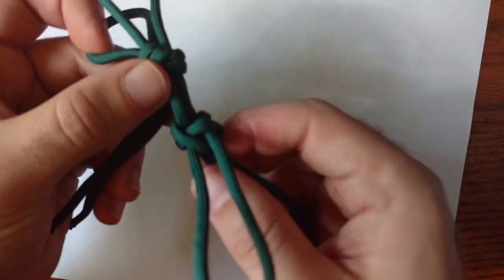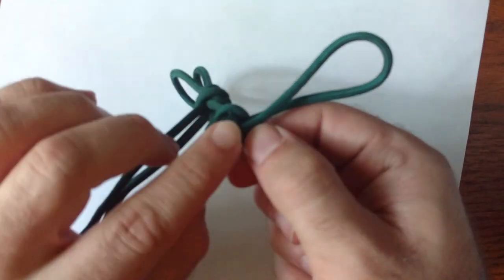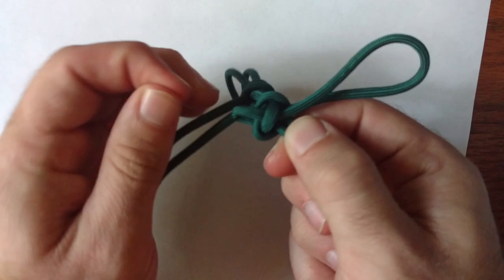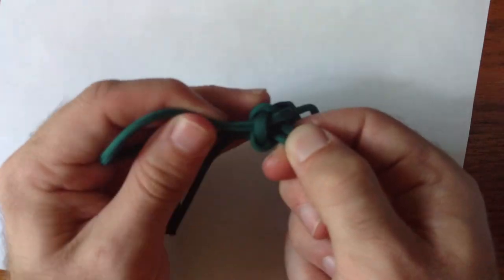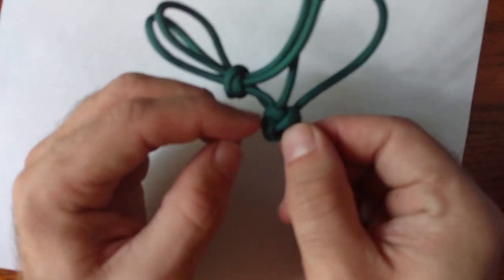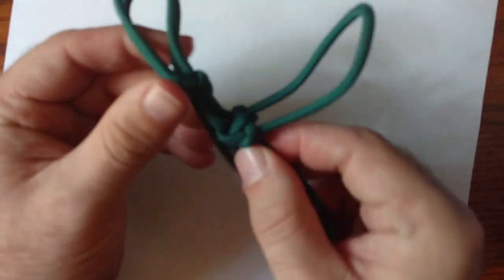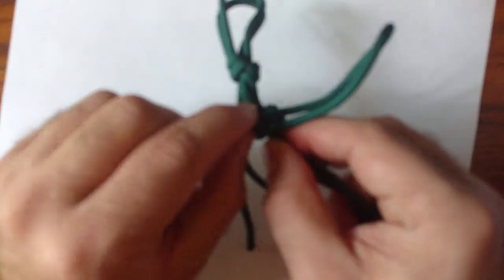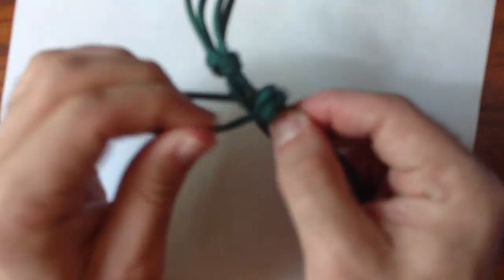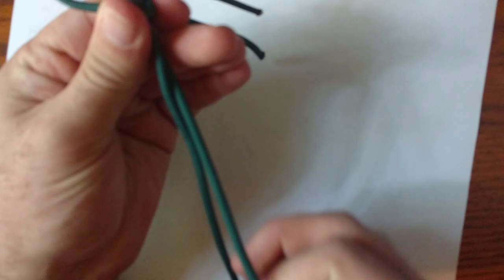We're going to do the same thing on this one. It goes under here, so we're going to grab it there. One. We're going to turn it over. It goes under here, so we're going to grab it down here after it goes under. Two. And we're going to turn it one more time, and it goes under here, so we're going to grab it here where it goes under. Three. Now we're going to hold the knot and pull.